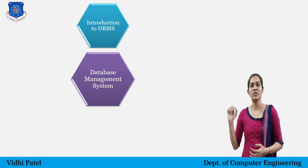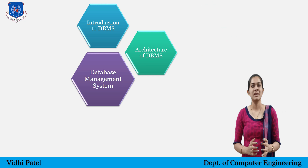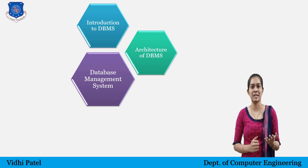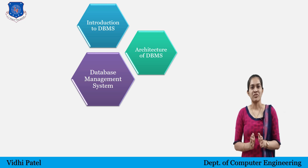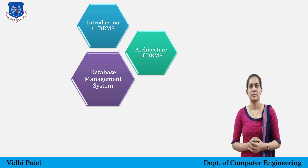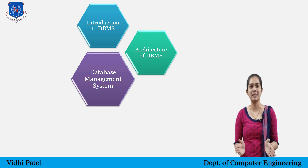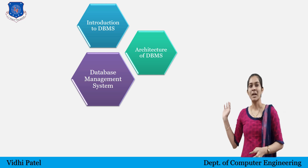Next part: Architecture of Database Management System. This part will describe the generalized three-level architecture of the Database Management System suggested by ANSI SPARK. This will include the description of schema, subschema, instance, and data independence. After this, structure, components, and functions of the DBMS will be described, followed by various data models on which the architecture of DBMS is developed. At the end, different types of database systems will be discussed.